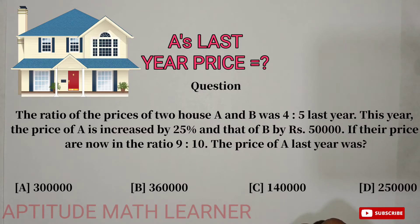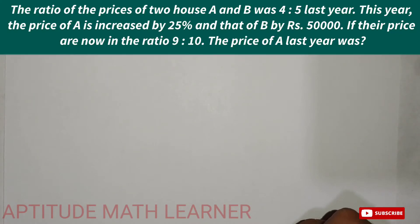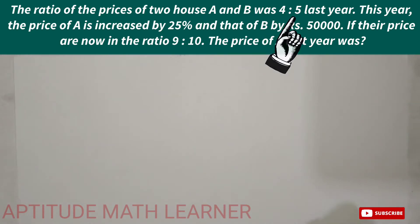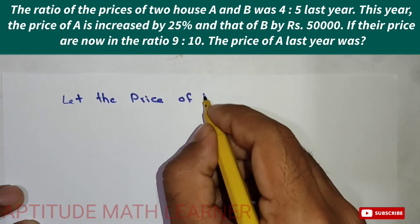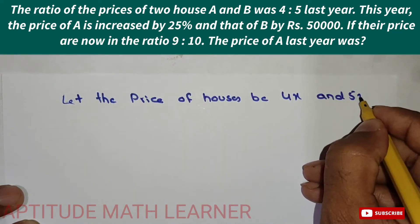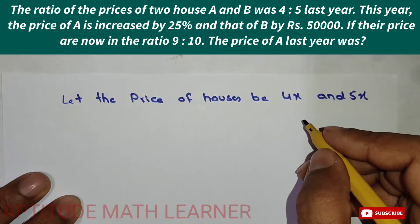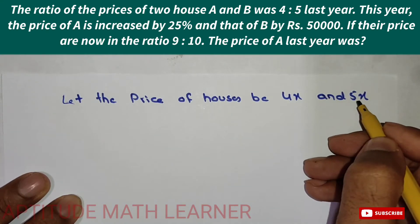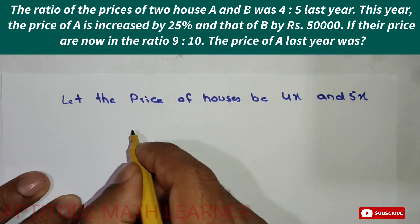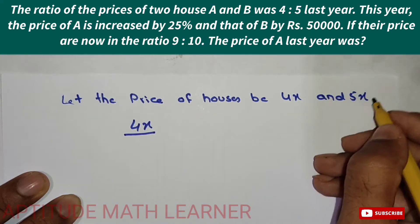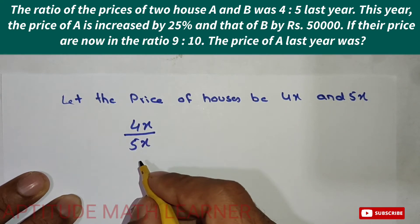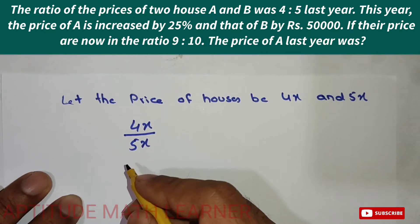We have to find out the price of house A. For this, we let the price of house A be 4X and house B be 5X, representing their prices last year. So 4X and 5X are in the ratio 4:5, which matches the given condition.